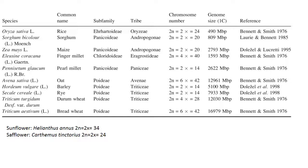Among important cereals, rice has 24 chromosome numbers and a genomic size of 470 Mb. Sorghum has 809 Mb genomic size and 20 chromosome numbers in diploid form. Maize has 20 chromosome numbers in diploid form and a genomic size of around 2.8 Gb. Finger millet (ragi) has 36 chromosome numbers and a genomic size of 1.6 Gb.